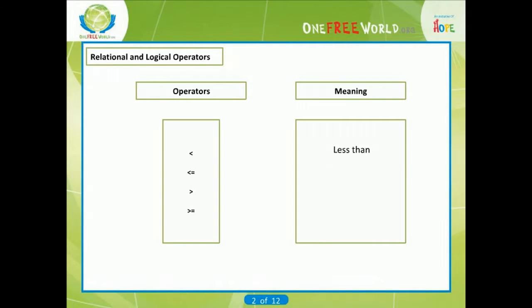Relational and logical operators. There are four relational operators in C. The first sign is the sign for less than, the second sign is the sign for less than or equal to, the third sign is the sign for greater than, the fourth sign is the sign for greater than or equal to.